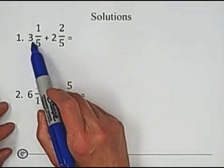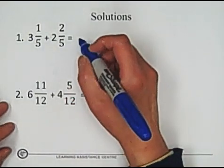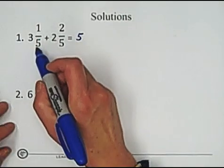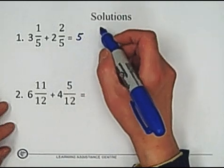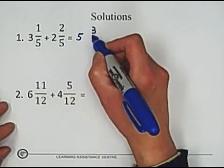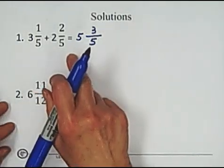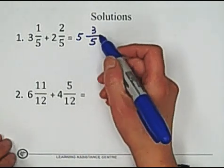Solution. The first question. We just add whole number portion. 3 plus 2 equals 5. Because of the same denominator, just add the numerator. 1 plus 2 equals 3. Keep the denominator unchanged. So 5 and 3 over 5. It is not necessary to simplify.